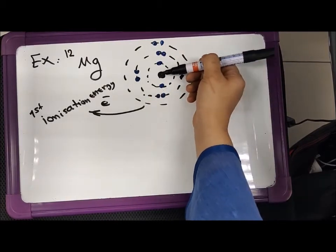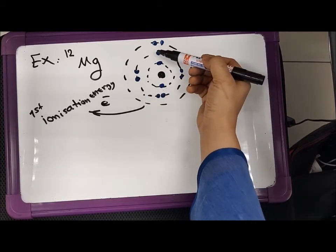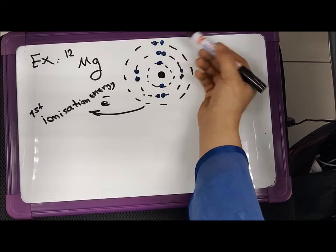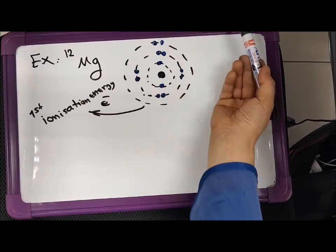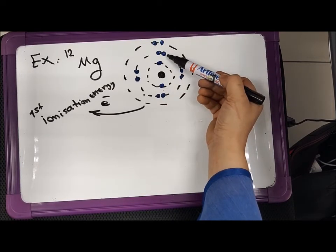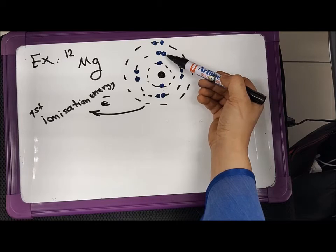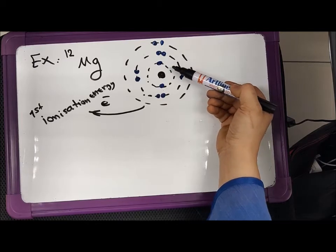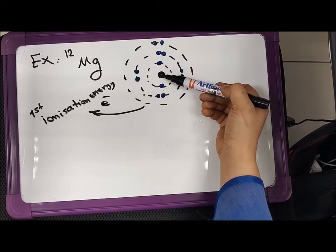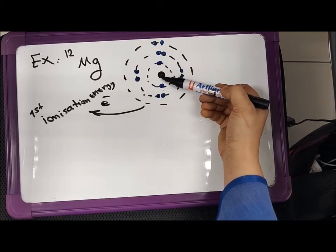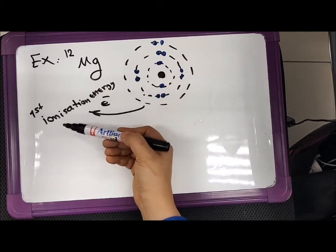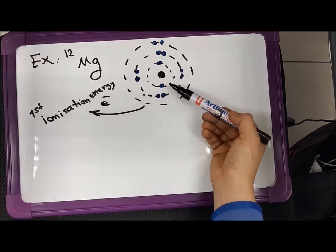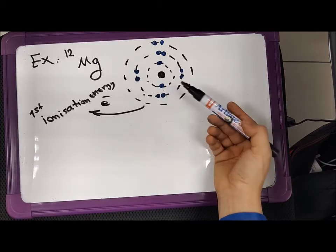Once we move in, the further we go in, we can take more electrons out — the first taken, the second taken — so we have to go to the next shell. Every time we get closer to the nucleus, the amount of energy that we have to spend for ionization becomes higher.